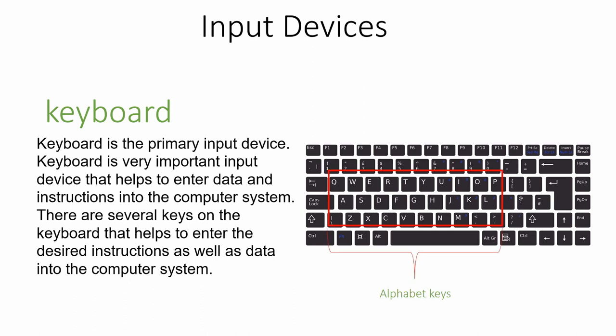We use alphabet keys for typing words, function keys for different types of activities, arrow keys and special keys for special tasks, and numeric keys for typing numbers. All these different parts of the keyboard contribute to providing data and instructions to the computer system, making it a very important input device.